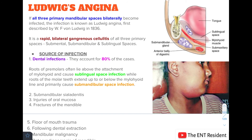Ludwig's angina is a rapid bilateral gangrenous cellulitis of all three primary mandibular spaces — the submental, submandibular, and sublingual spaces. It was first described by W.F. von Ludwig in 1836. Dental infections account for 80% of cases. Roots of the premolar above the mylohyoid line cause sublingual space infection, while roots of the second and third molars at or below the mylohyoid line primarily cause submandibular space infection.